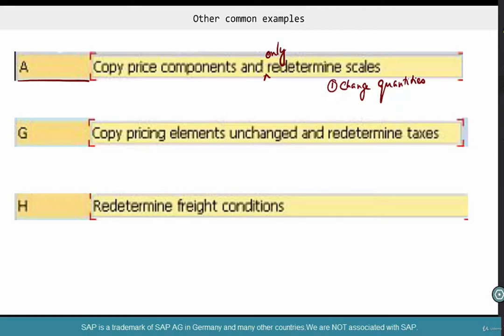Well, this is a very restricted example that I'm trying to give you, but there are many other broad areas where A can be used, especially when transferring from one document to another, which we'll talk about in a bit. Another example is G. Now, when it comes to G, copy pricing elements unchanged and redetermine taxes.